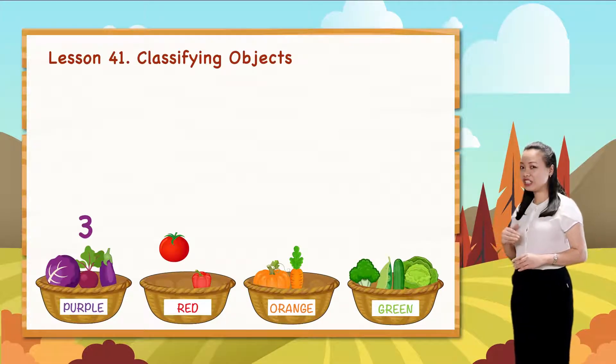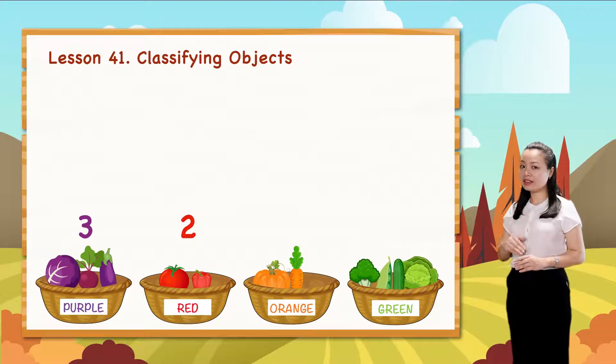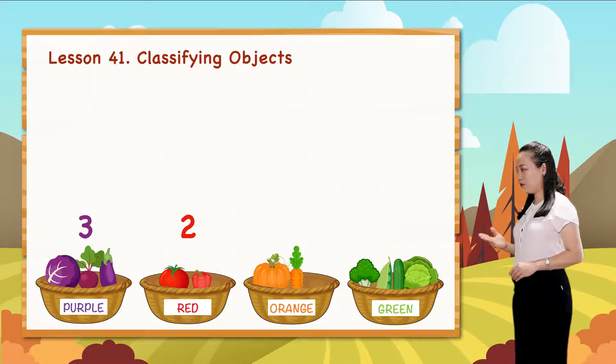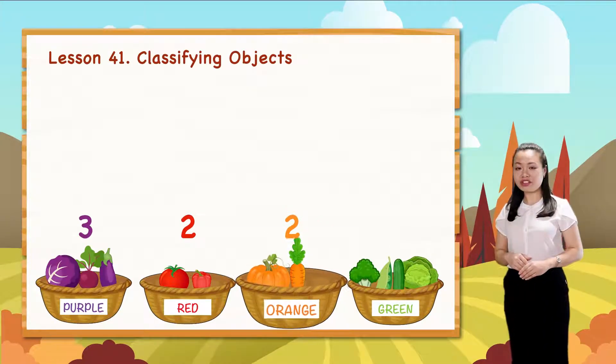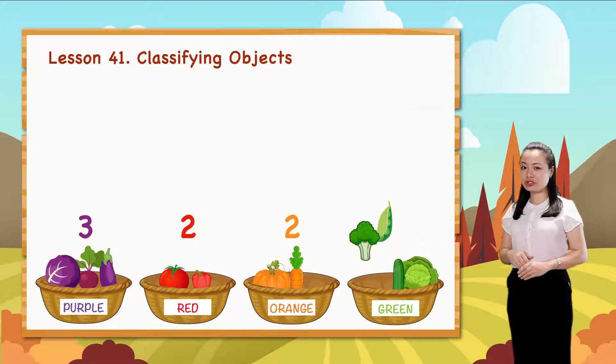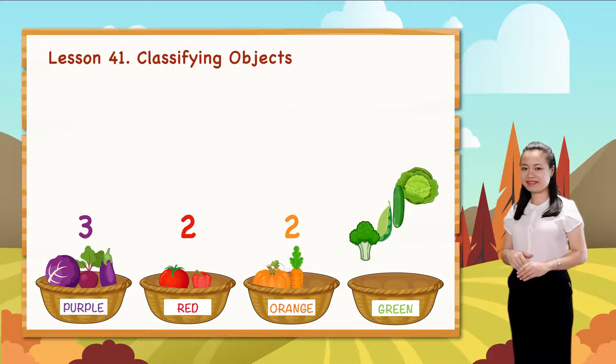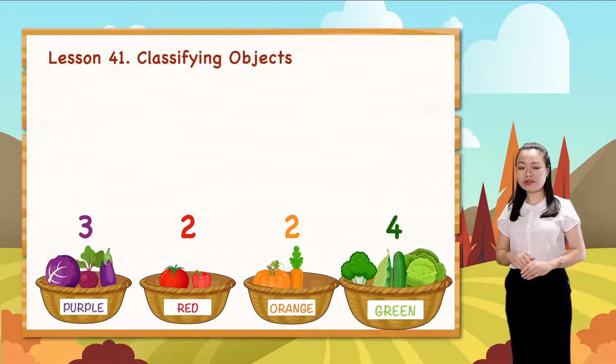Next. One, two, so there are two vegetables in the red group. Next. One, two, so there are two vegetables in the orange group. The last one. One, two, three, four. So there are four vegetables in the green group.